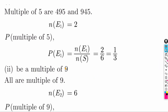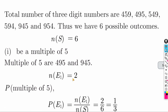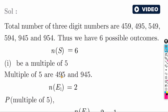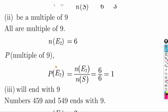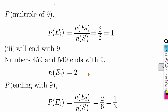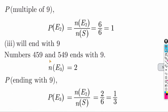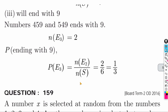Find probability that the number is a multiple of 9. The sum of digits 4 + 5 + 9 = 18, which is divisible by 9. So all 6 numbers are multiples of 9. Probability = 6 by 6 = 1. Find probability that the number ends with 9. Numbers ending in 9: 459, 549 — that is 2 numbers. Probability = 2 by 6 = 1 by 3.